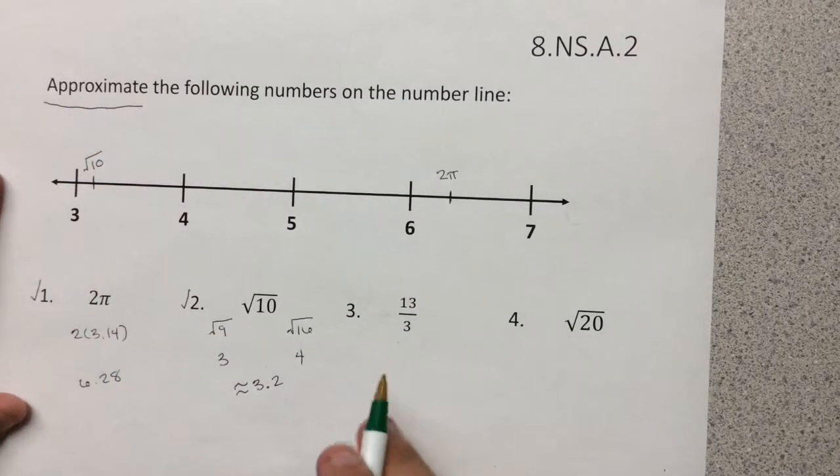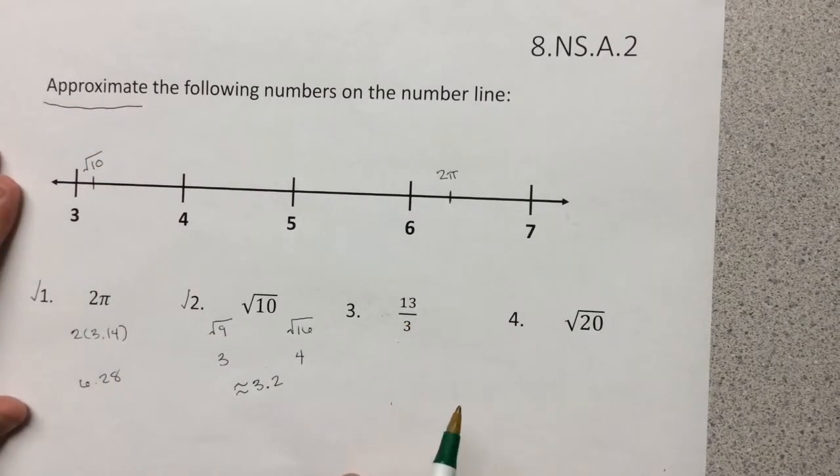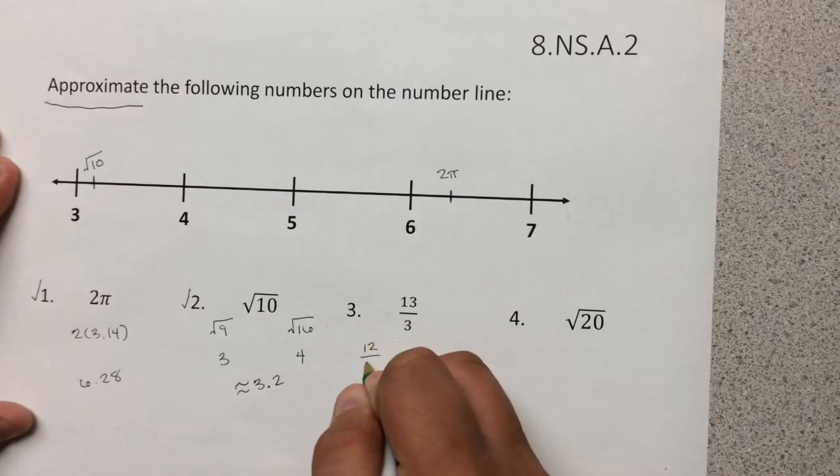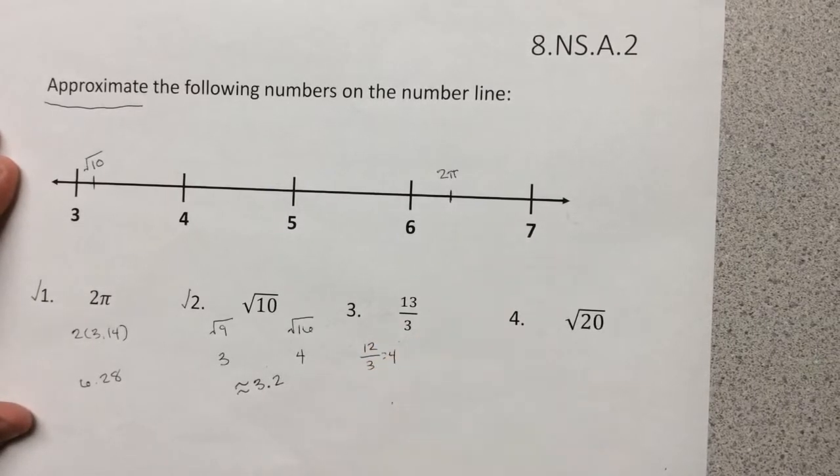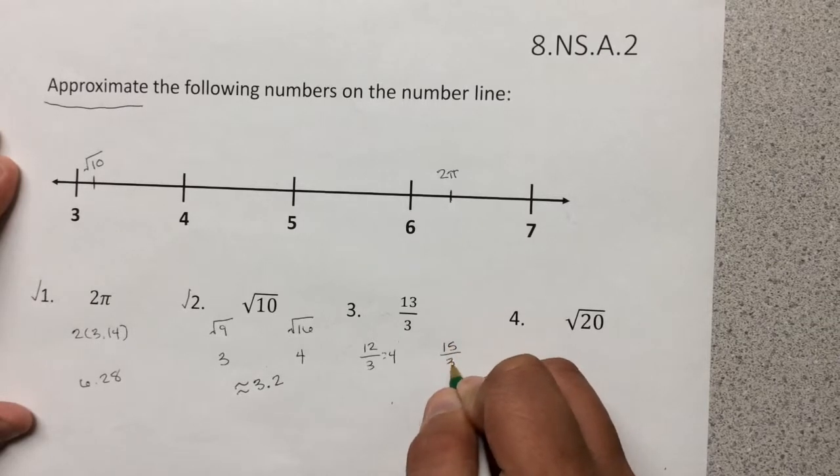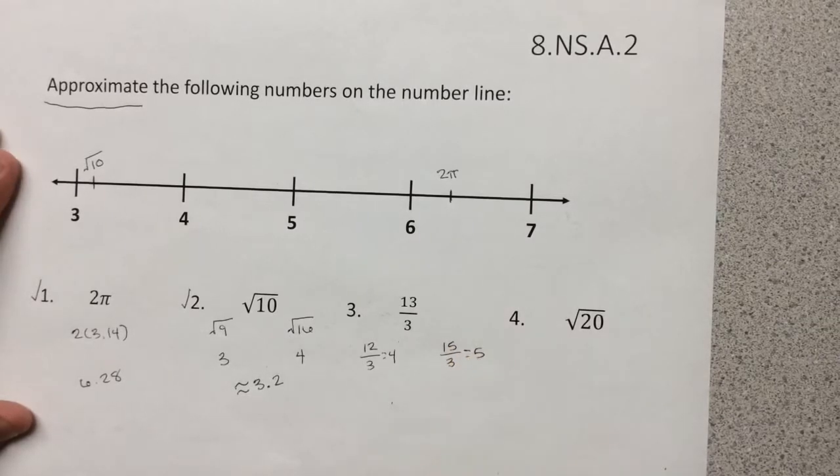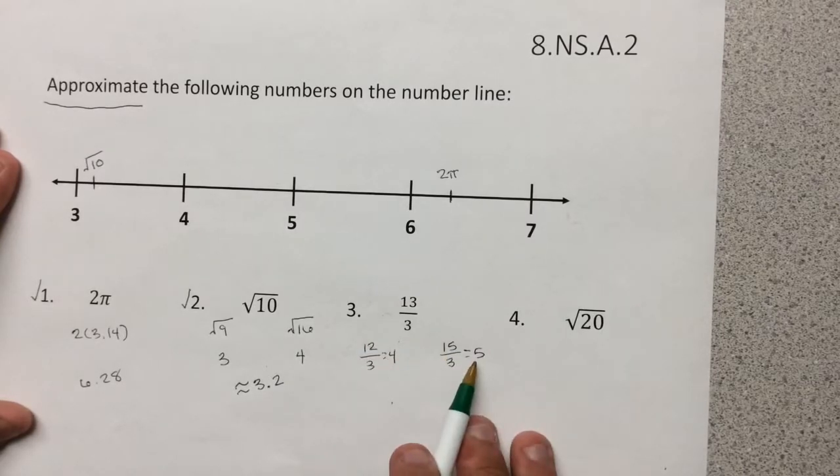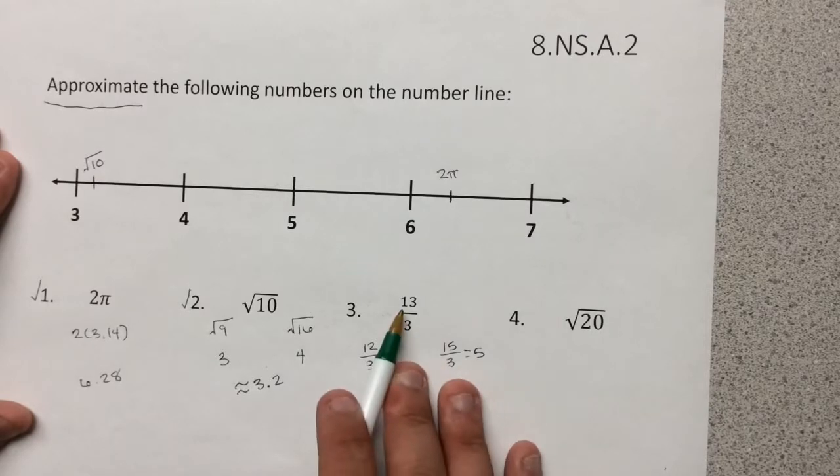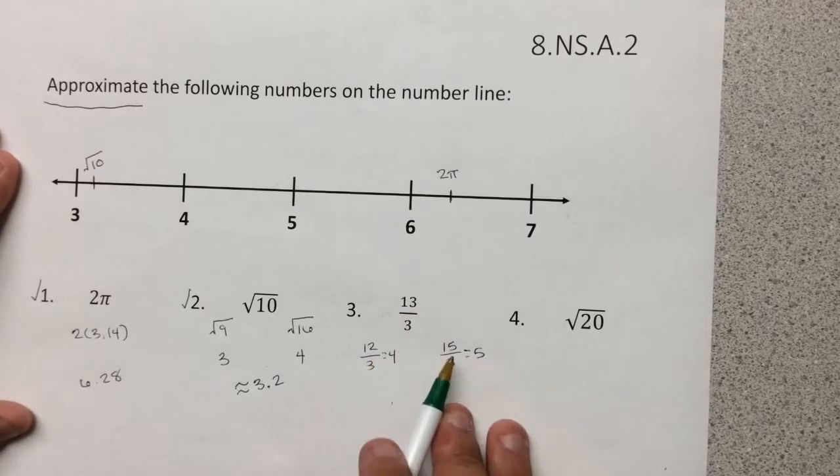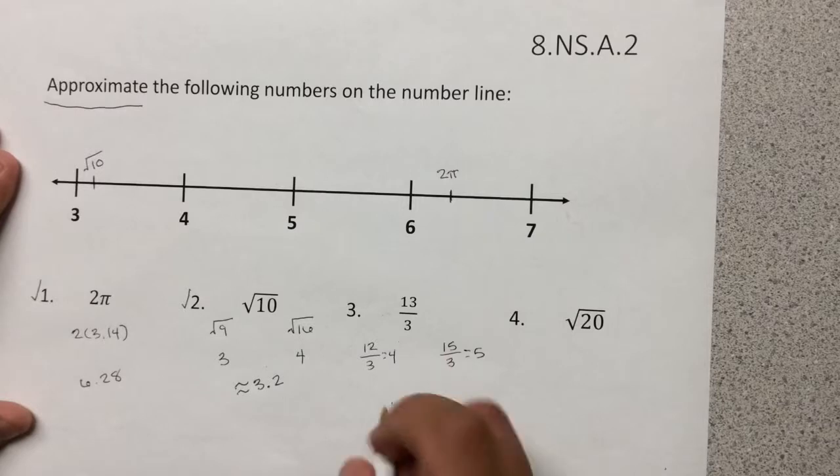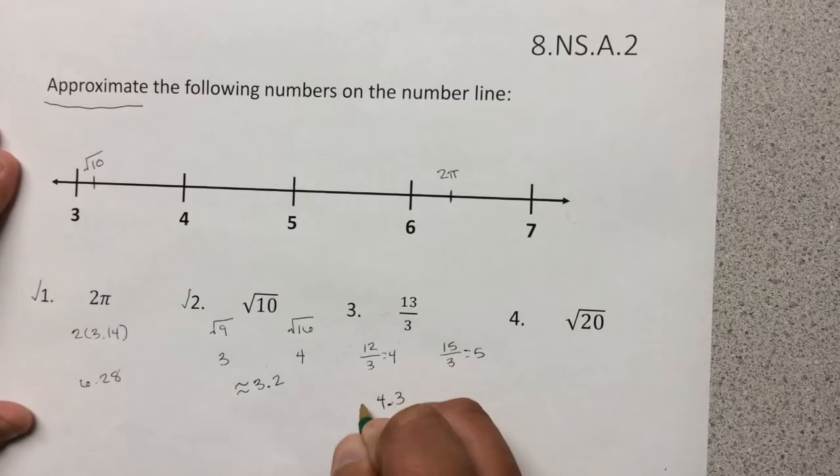Next is 13 over 3. By knowing what my fractions are, I know that 12 divided by 3 is equal to 4, and then I also know that 15 divided by 3 is equal to 5. Because 13 is in between 12 and 15, that means my answer has to be between 4 and 5. But since 13 is so much closer to 12 than it is to 5, then I can say that this is about 4.3.